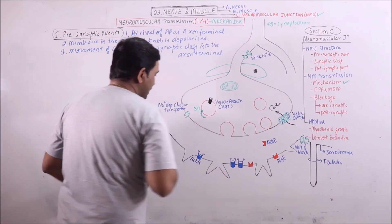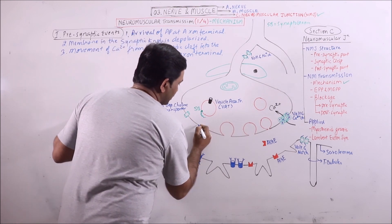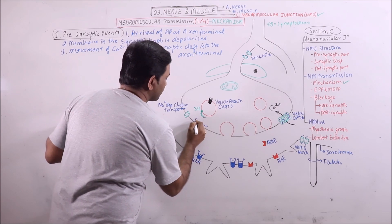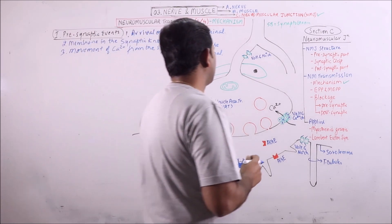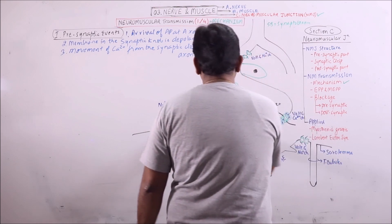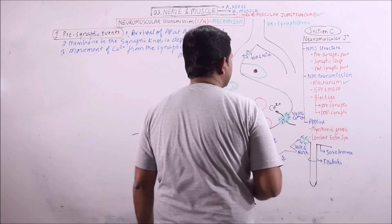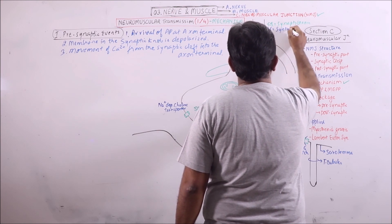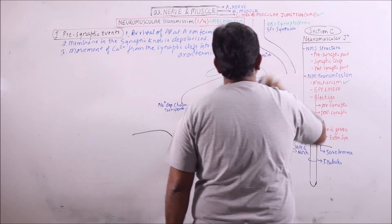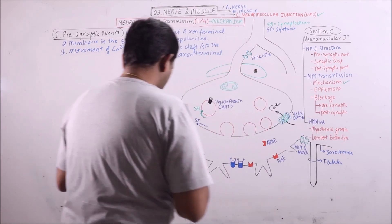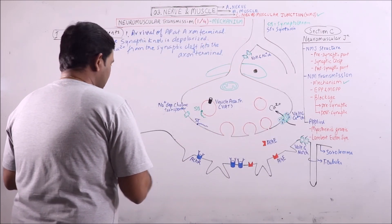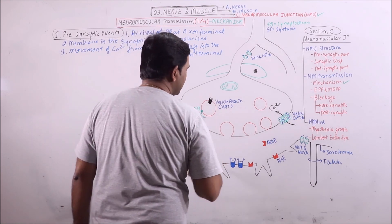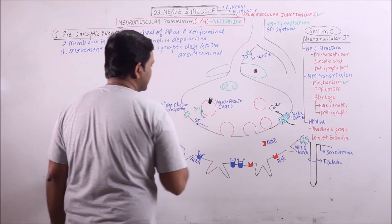And there are some proteins in the axonal membrane in the synaptic knob which are known as syntaxin. Synaptobrevin is VAMP, which means vesicular associated membrane protein, so it is a type of VAMP.